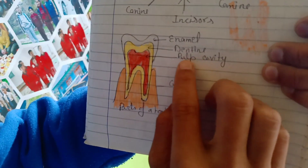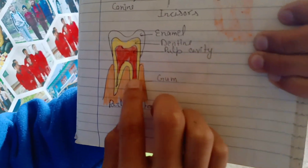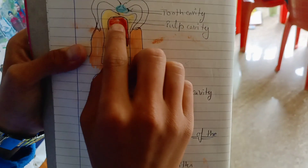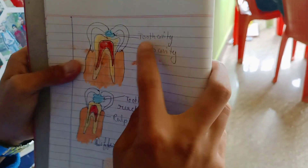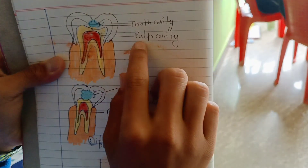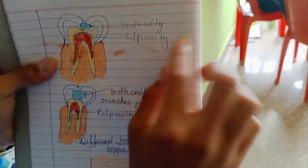So third is pulp cavity. So fourth is gum. Dear friends, this is the next picture. This is tooth cavity and next pulp cavity.